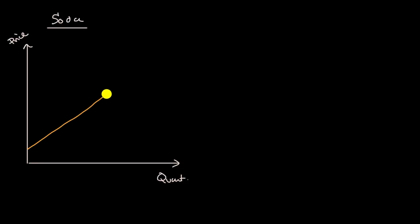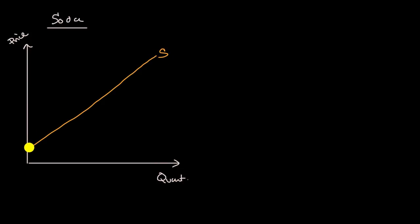This is our upward sloping supply curve. At a low price, not a lot of people want to produce soda, but as price goes higher, more and more people would want to produce it. We could also view this as a marginal cost curve — that first unit might be quite easy to produce, but it gets more and more expensive as you have to hire and train more people and get real estate for your factories.